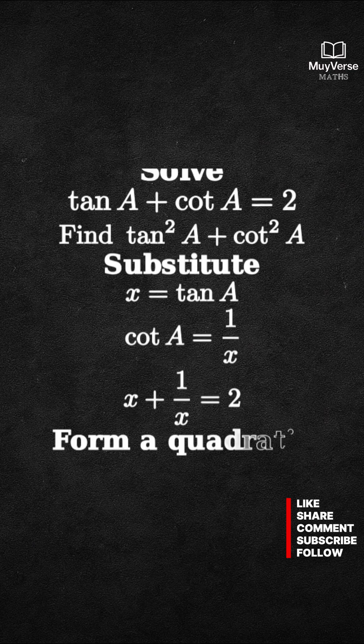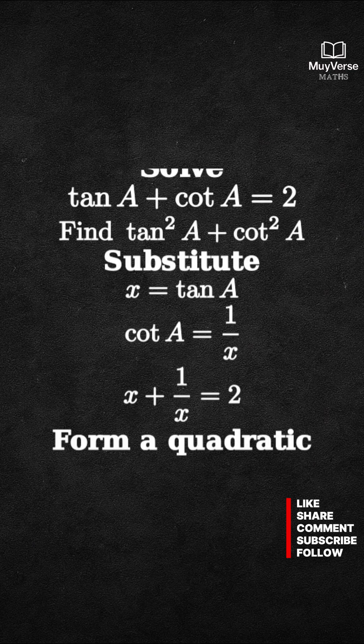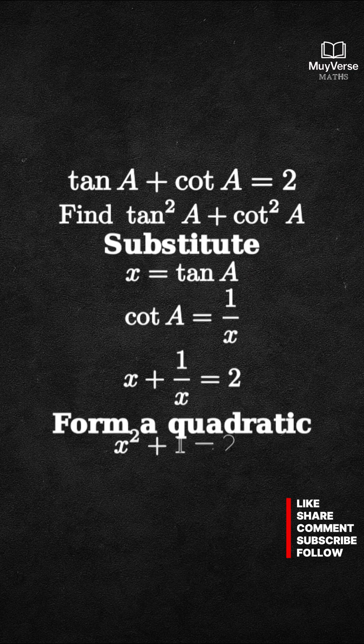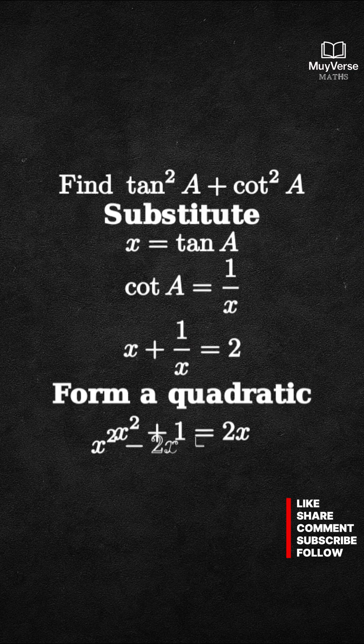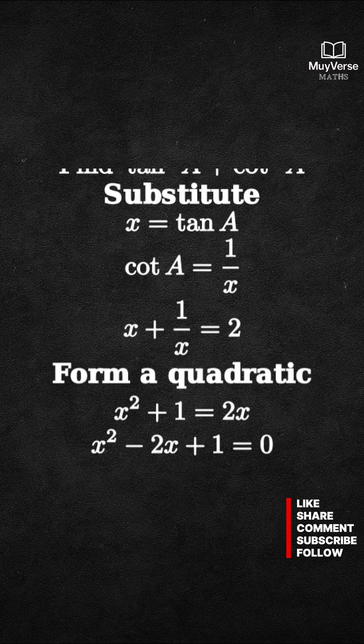Step 2: clear the fraction. Multiply both sides by x. That gives x² + 1 = 2x. Now bring everything to one side: x² - 2x + 1 = 0.